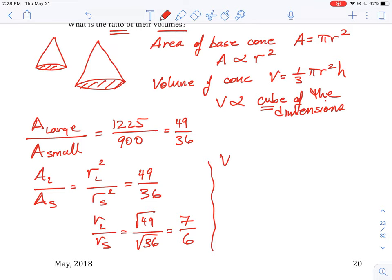Which is going to be the square root of 49 all over the square root of 36, which is 7 over 6.